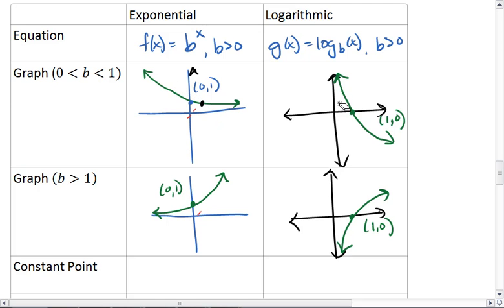For our logarithms, we also have a mirror image, but this mirror image is across the x or the horizontal line. So between 0 and 1 is a mirror image of when b is greater than 1.